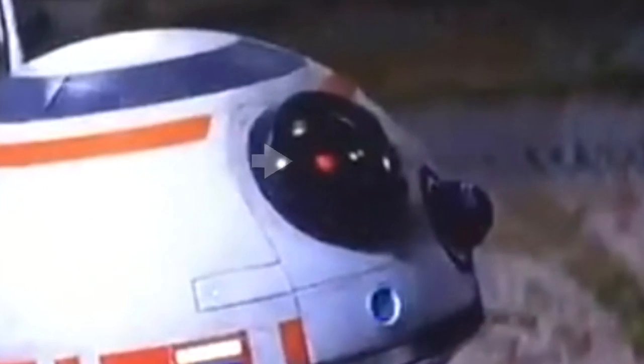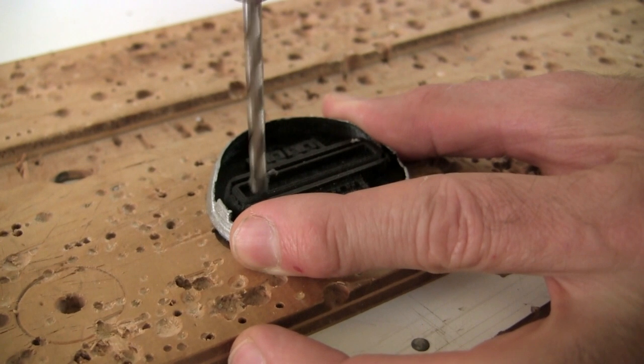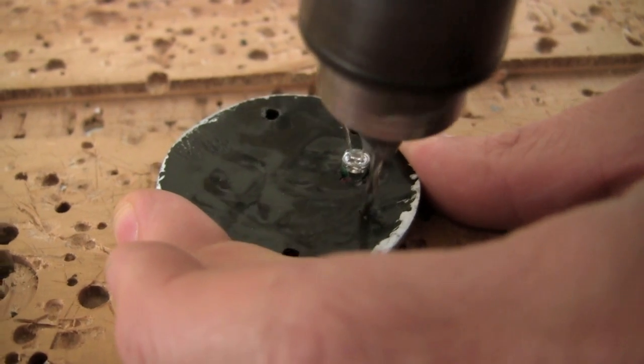Only one light in the radar eye ever lights up in the actual BB-8. So I finally drill that hole for the radar eye. I also drill some additional holes behind the radar eye, above and below the LED.